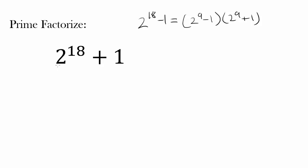Well, one way, you may say, is to actually find 2 to the 18th, which is going to take you some time. 2 to the 10th is 1,024, so 2 to the 18th is going to be 1,024 times 256. You can actually multiply this out, add one to it, and try to prime factorize that.